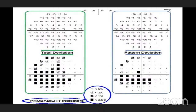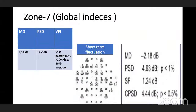Zone seven contains global indices. Mean deviation (MD) gives the overall value of the total amount of visual field loss. The normal range is plus or minus 4 decibels. A minus value indicates field loss; a plus value indicates the field is above average.